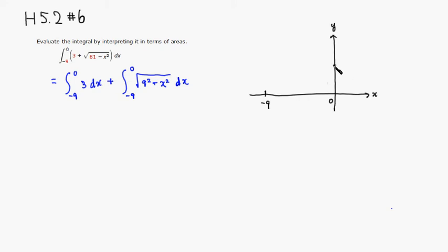Then the value is 3, so 3 is right here. So the graph is going to look like this. Then it's going from negative 9 to 0, so we're looking at the region right here.